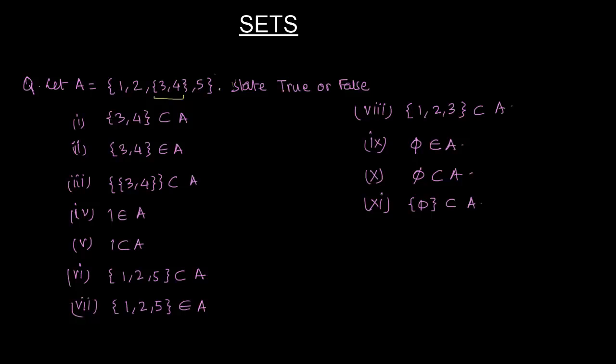And we have to state which of these following statements are true or false. There are 11 of these statements. Now it says {3, 4} is a subset of A. Now what happens? 3, 4 here occurs as an element. We know that it is the elements which are separated by the commas. So 3, 4 though it is a set is still an element of set A. So this is a false statement.